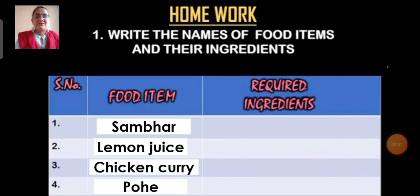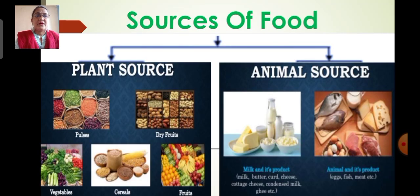Now we will move on to our next topic: sources of food. To make different food items and dishes we require many food ingredients. All the food that we eat mainly comes from two sources: plant sources and animal sources. From plant sources we get pulses, dry fruits, vegetables, cereals and fruits.